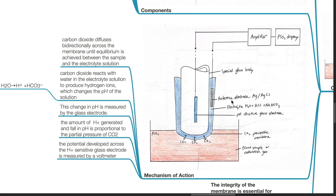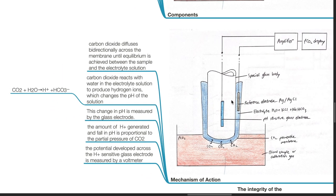Carbon dioxide diffuses bidirectionally across the membrane until equilibrium is achieved between the sample and the electrolyte solution. Carbon dioxide reacts with the water in the electrolyte solution to produce hydrogen ions, which changes the pH of the solution: CO2 plus H2O becomes H+ plus HCO3-. This change in pH is measured by the glass electrode. The amount of H+ generated and the fall in pH is proportional to the partial pressure of CO2. The potential developed across the H+-sensitive glass electrode is measured by a voltmeter.